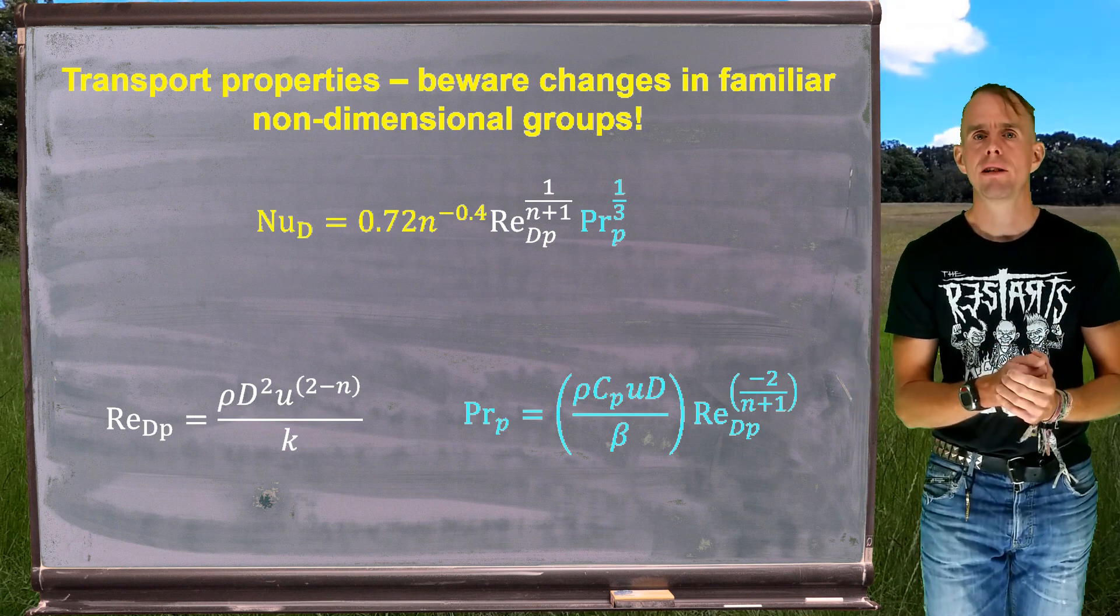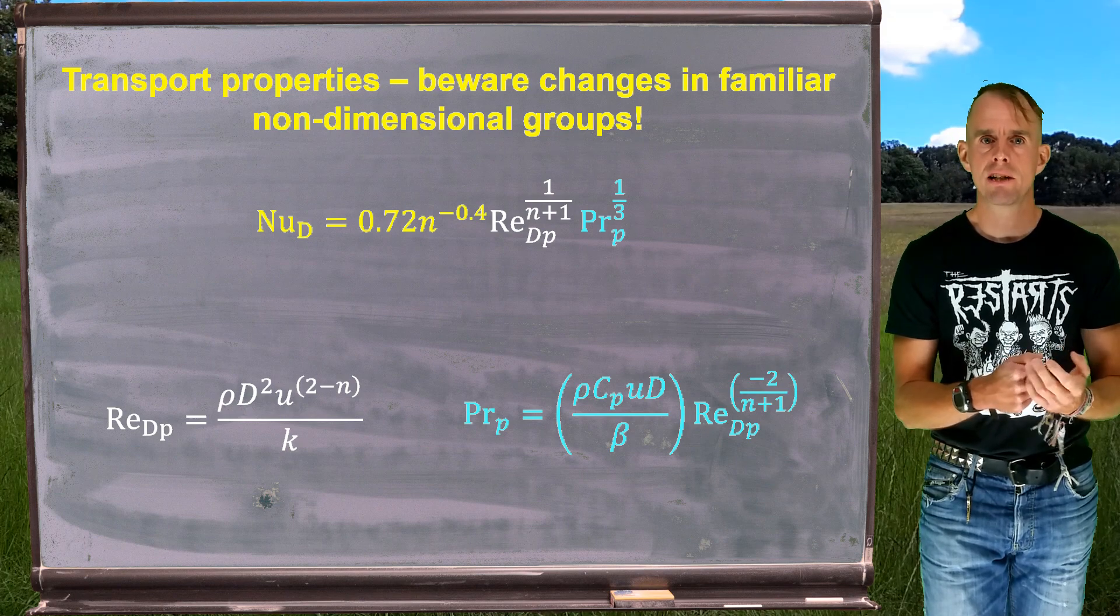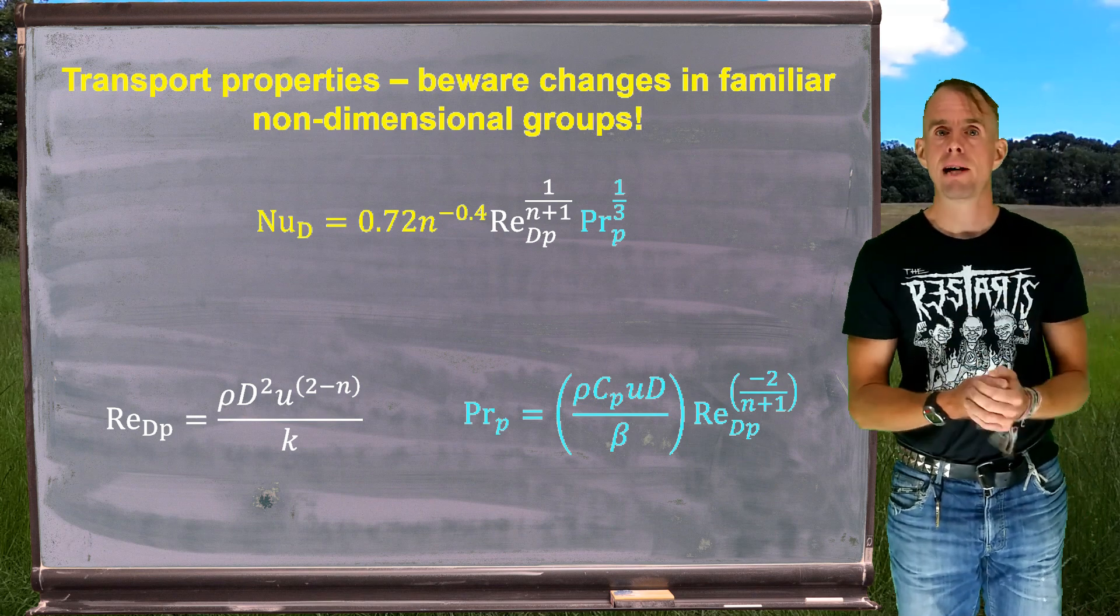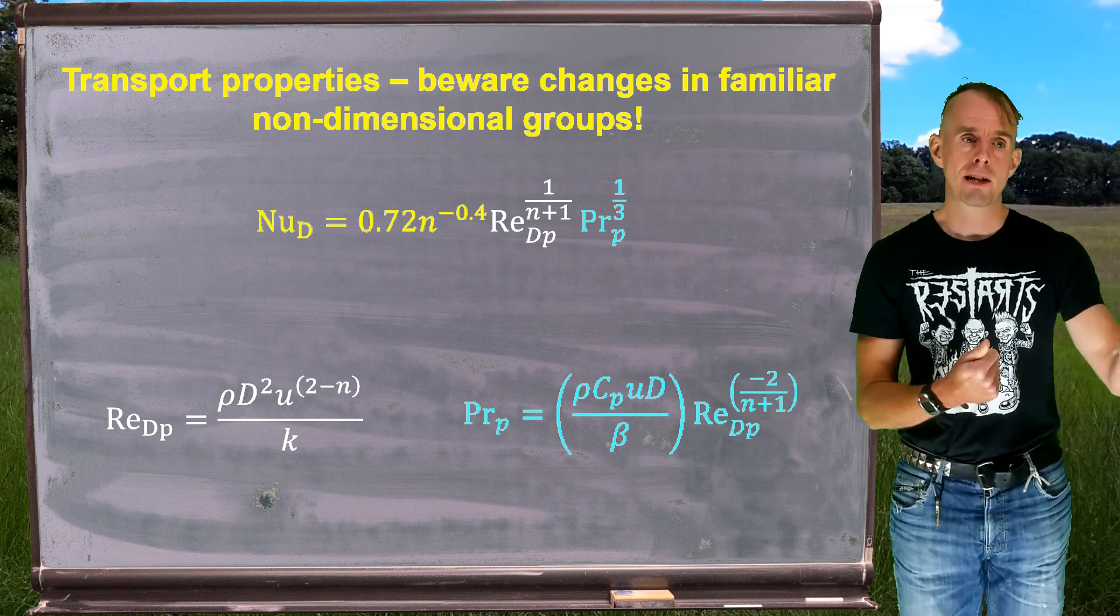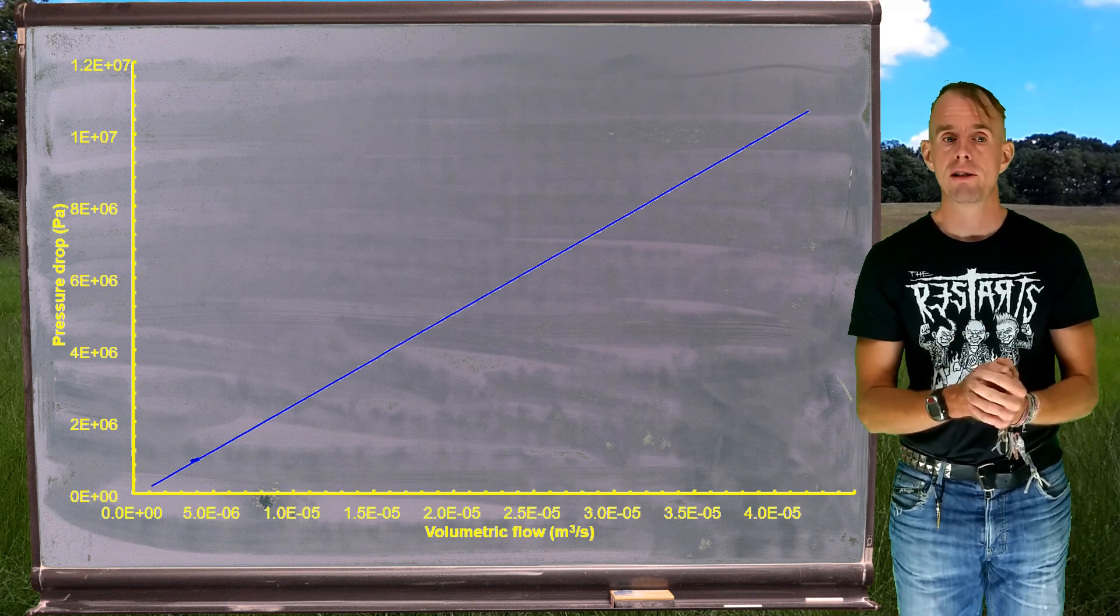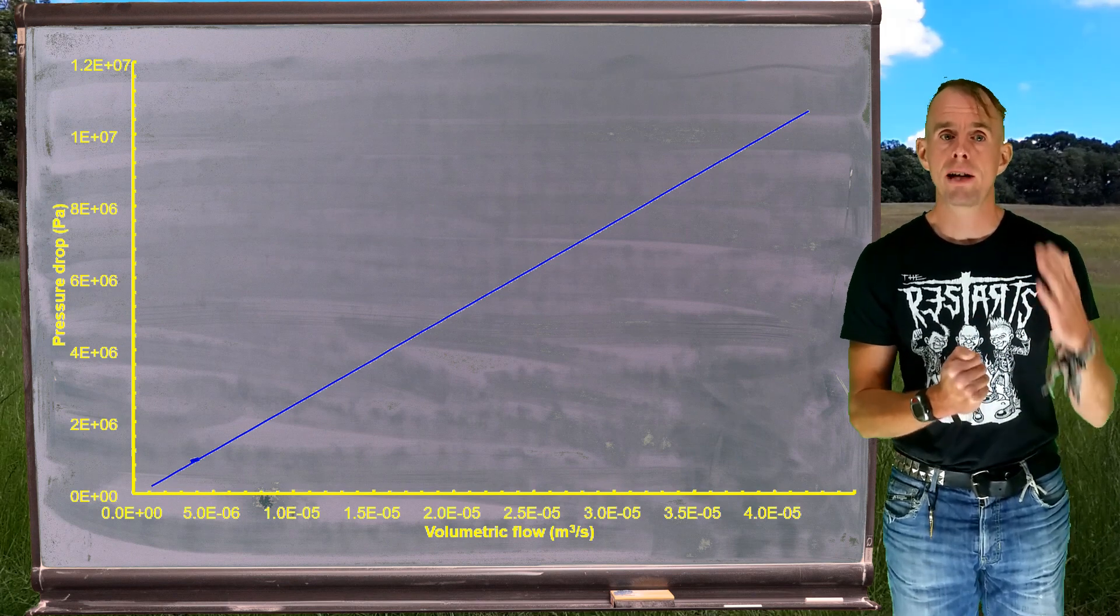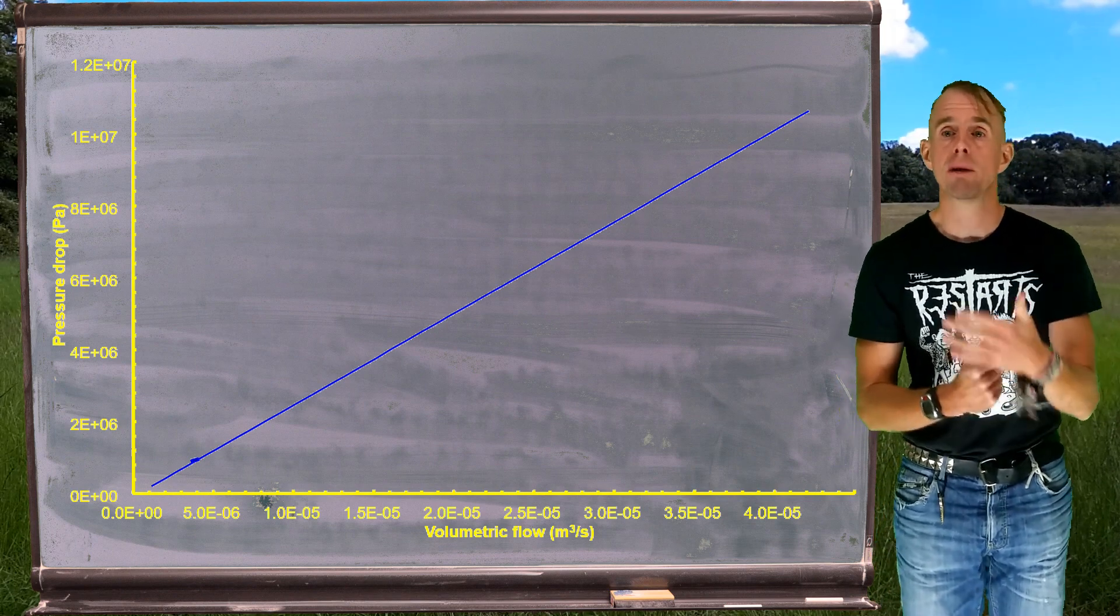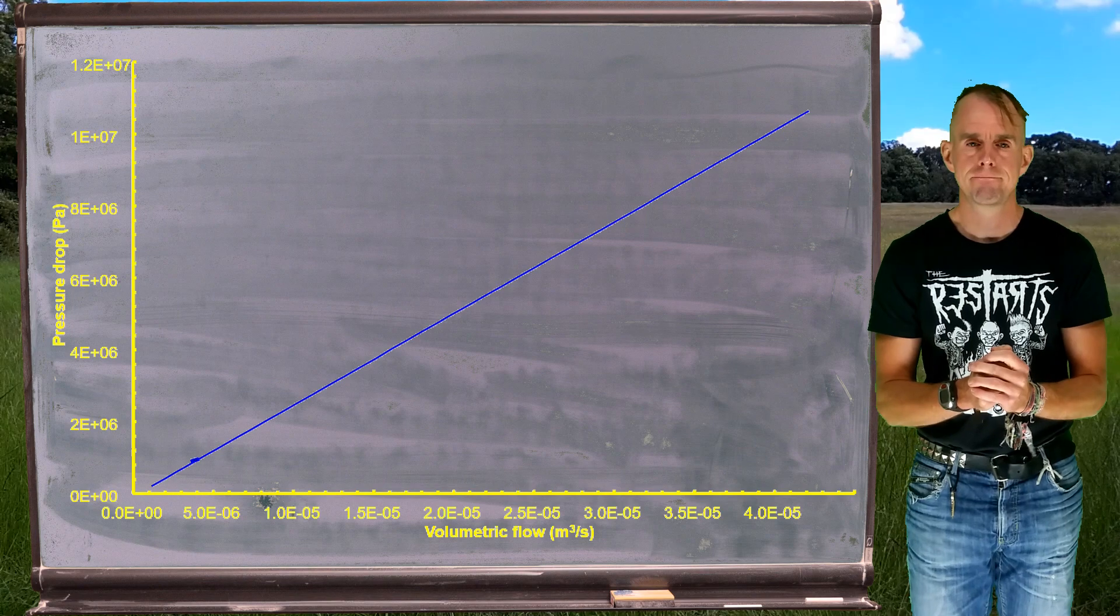Let's now have a look at another parameter that chemical engineers are very interested in, and that is pressure drop in a flow. So this graph now on the blackboard, I'm plotting pressure drop in Pascal as a function of volumetric flow rate. And I've put on there the Newtonian result. You can see that beautiful linearity between pressure drop and volumetric flow that we'd expect.